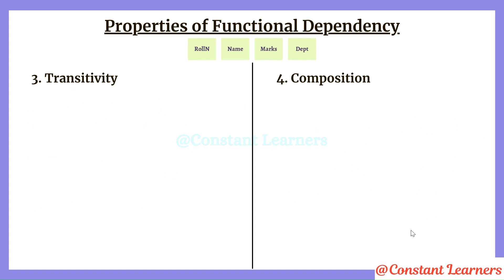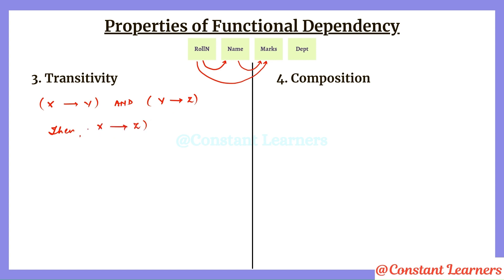The next property is transitivity. If roll number is determining name and name is determining marks, then by the transitivity property, roll number can also directly determine marks. Both functional dependencies must hold true: if X determines Y and Y determines Z, then X can also directly determine Z. Here the dependent Y is acting as a determinant, so the first determinant can also determine the last dependent.